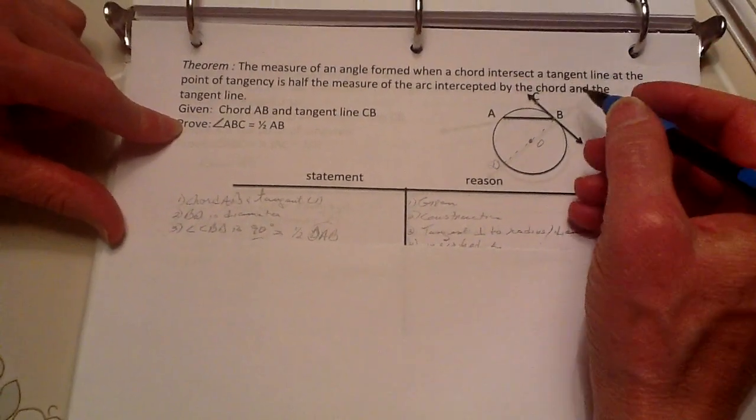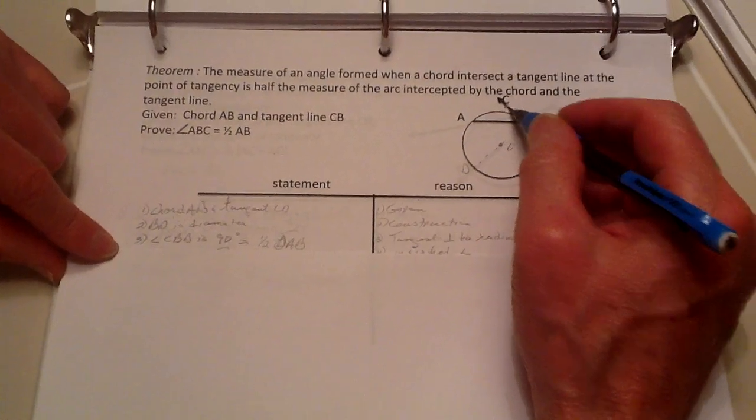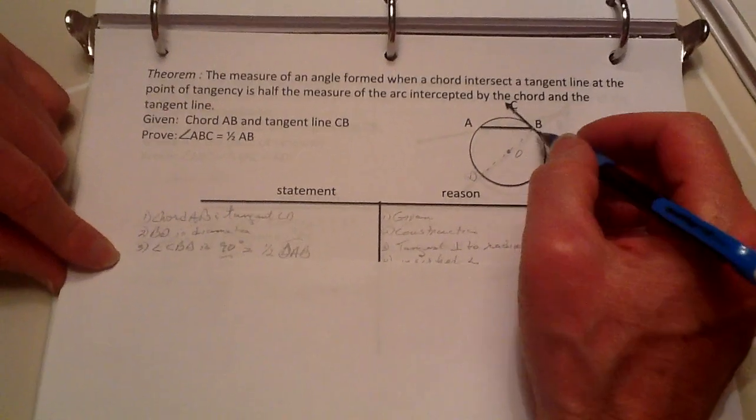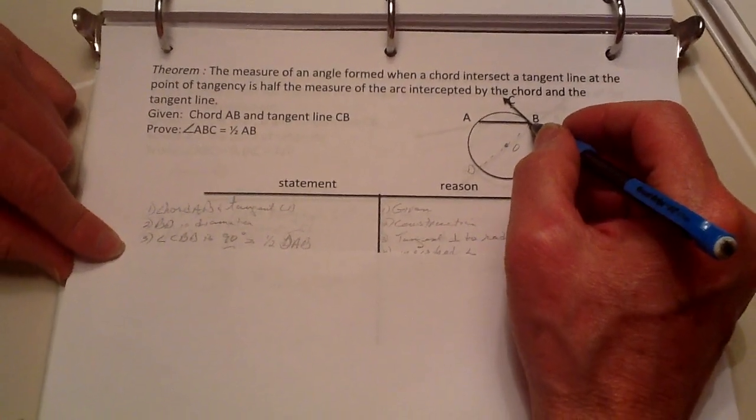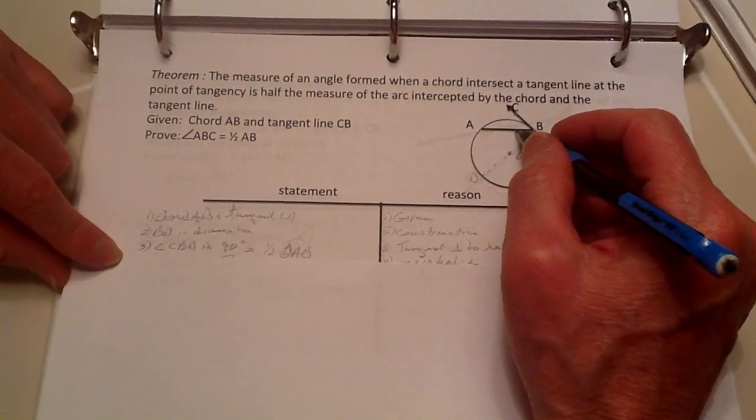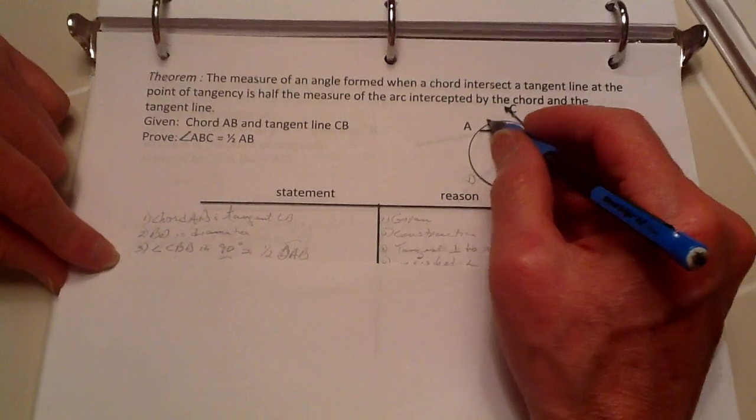And we know that the tangent line and the radius or diameter have to be perpendicular, and we know that this whole arc here—of D, A, B, D—this whole arc right here.